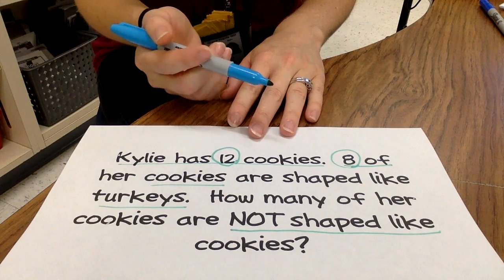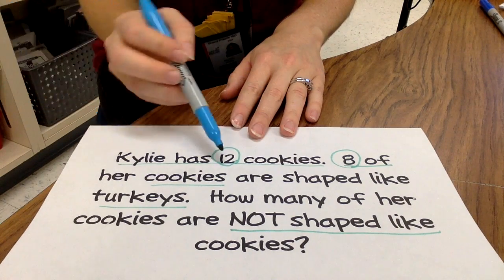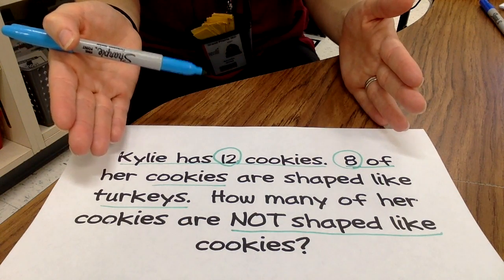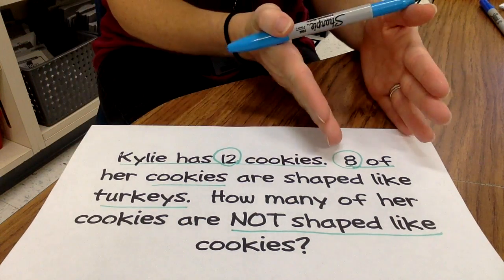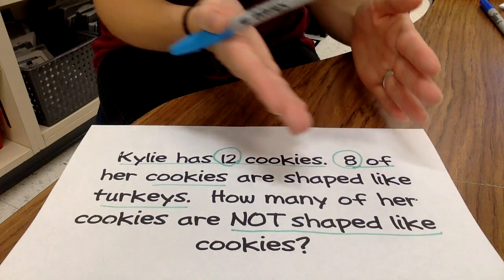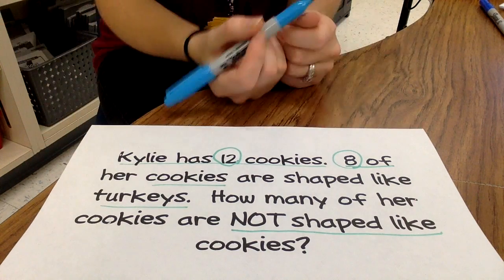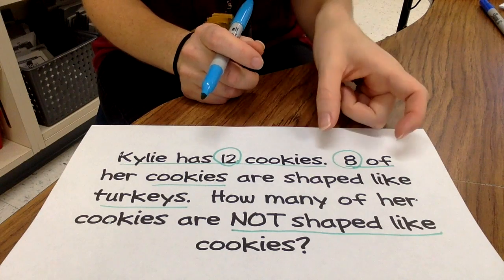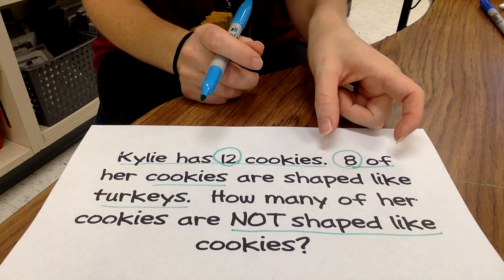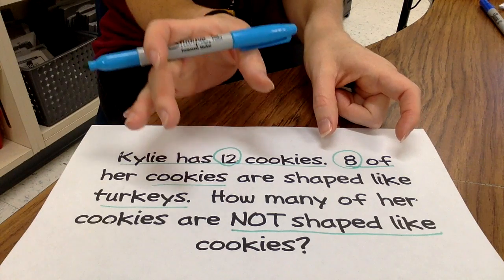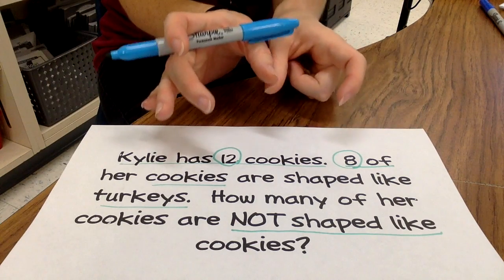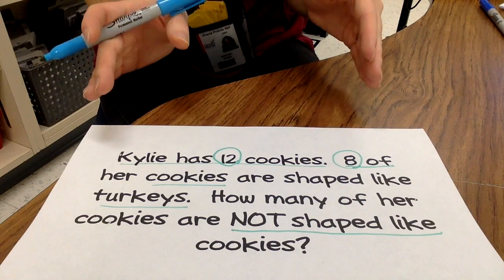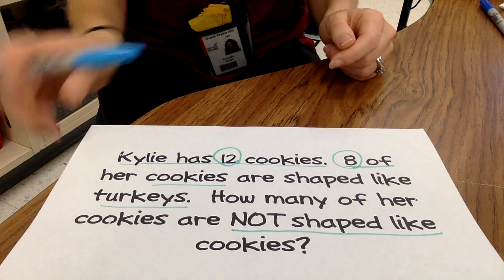The students would need to know that the 12 cookies Kylie has — that's the whole amount we're dealing with here. The eight cookies that are shaped like turkeys and however many cookies are not shaped like turkeys, those two are the parts. Those two parts — the eight cookies shaped like turkeys and however many cookies are not shaped like turkeys — make up the whole of Kylie's 12 cookies. So here's how we would show this with a strip diagram.